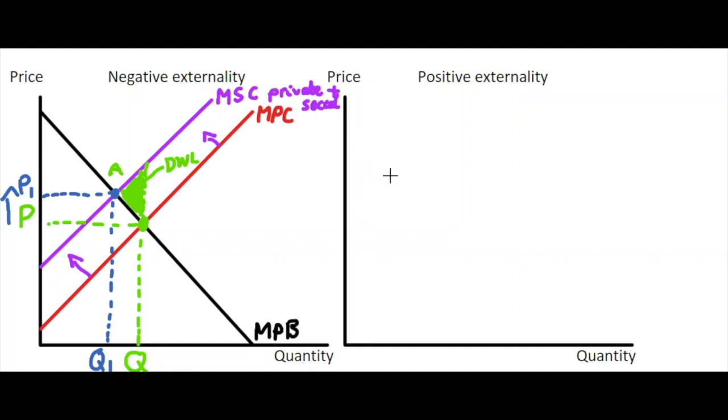Turning to a positive externality, we can once again draw our demand curve, downward sloping like this. As in the previous diagram, we call it the marginal private benefit of that good. We also have our supply curve, upward sloping as shown previously, but we call it the marginal private cost of production. Just like before, we have an equilibrium point where demand and supply intersect, giving us a price and quantity on the market.